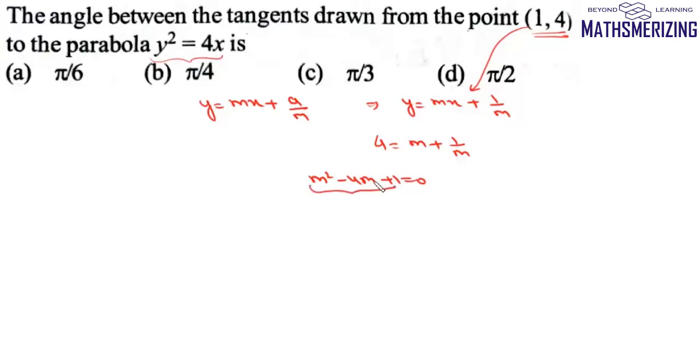Now it's a quadratic equation in m. So what is sum of roots? So sum of roots in this case is 4 and what is product of roots? m1 m2 is simply 1.